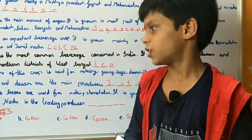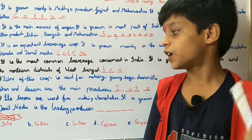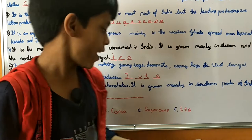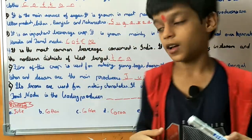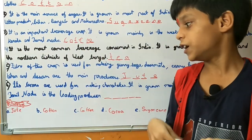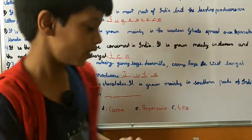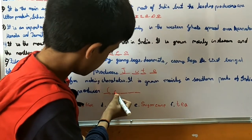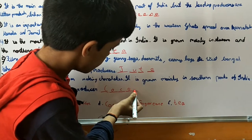Number 6: Its beans are used for making chocolate. It is grown mainly in the southern part of India, and Tamil Nadu is the leading producer. So friends, the answer is Cocoa.